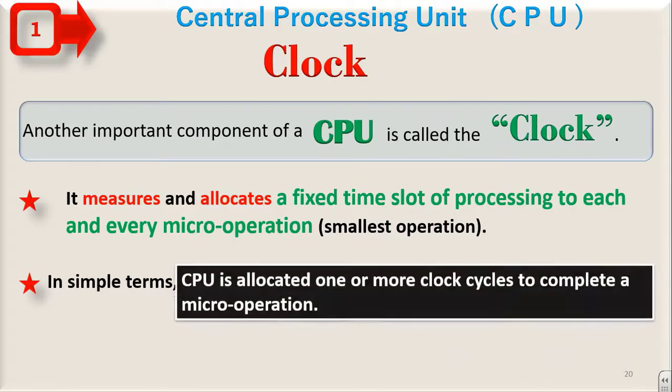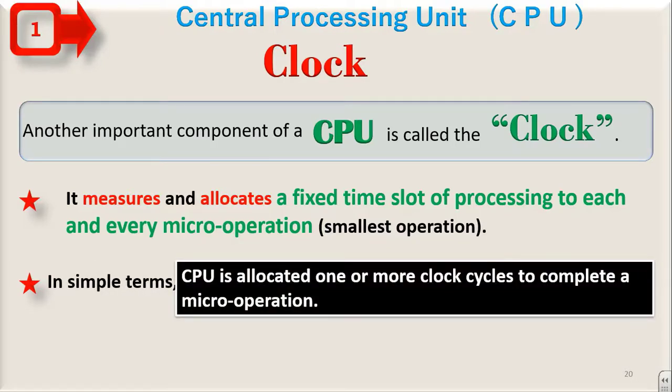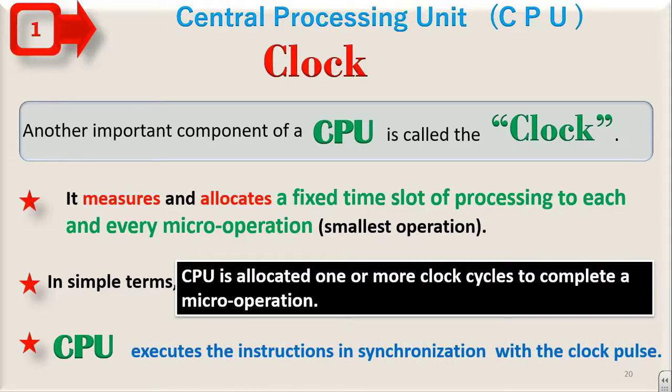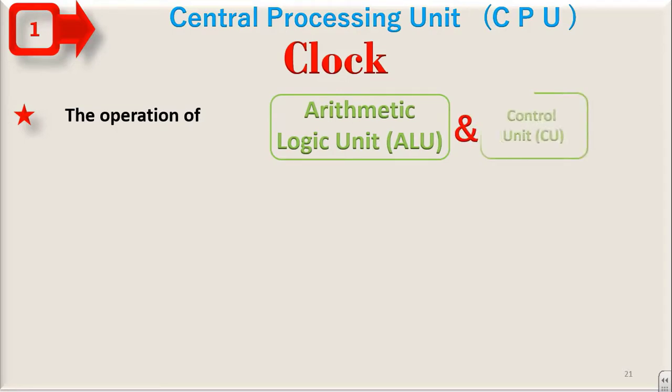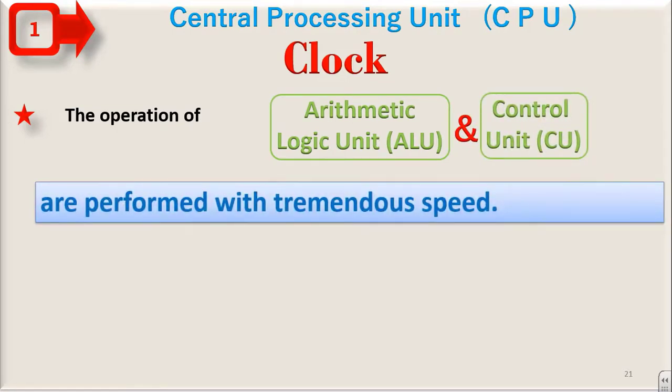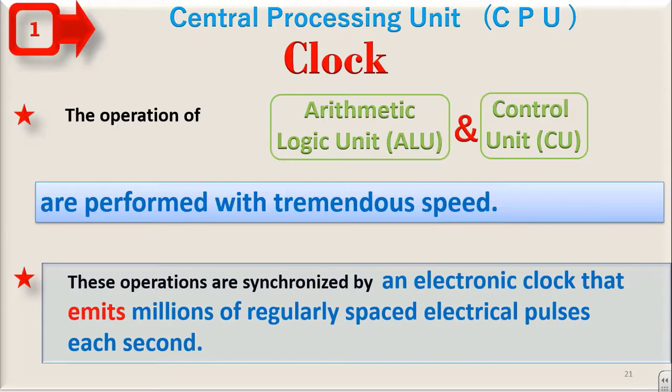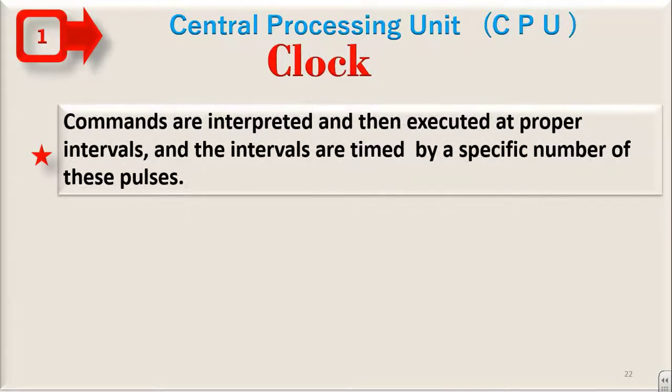In simple terms, the CPU is allocated one or more clock cycles to complete a micro operation. The CPU executes the instruction in synchronization with the clock pulse. The operations of the arithmetic logic unit and control unit are performed with tremendous speed. These operations are synchronized by an electronic clock that emits millions of regularly spaced electrical pulses each second. Commands are interpreted and then executed at proper intervals and the intervals are timed by a specific number of these pulses.